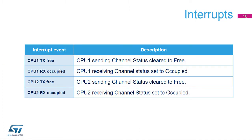Here is an overview of the Interprocessor Communication Controller interrupt. Each CPU has a TX-free interrupt associated to its own sending channel. Each CPU has an RX-occupied interrupt associated to the sending CPU channel.